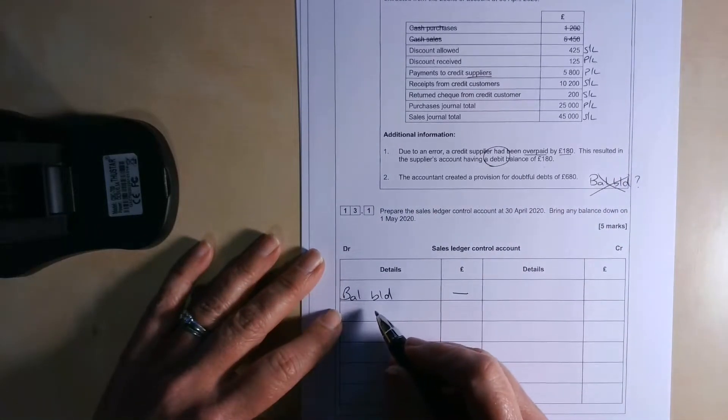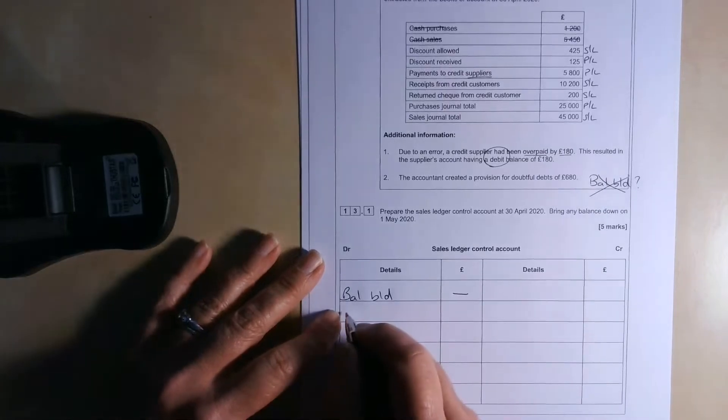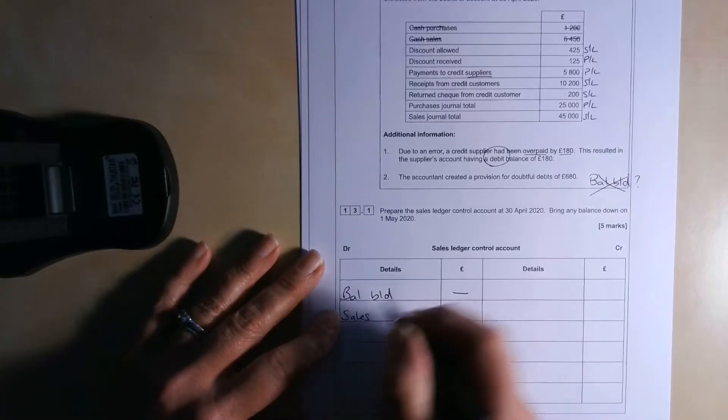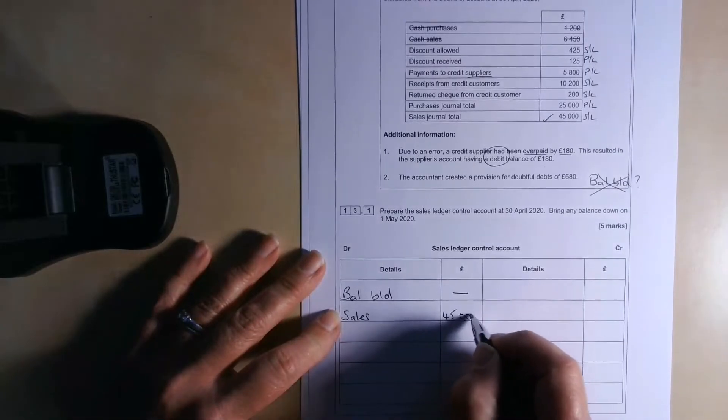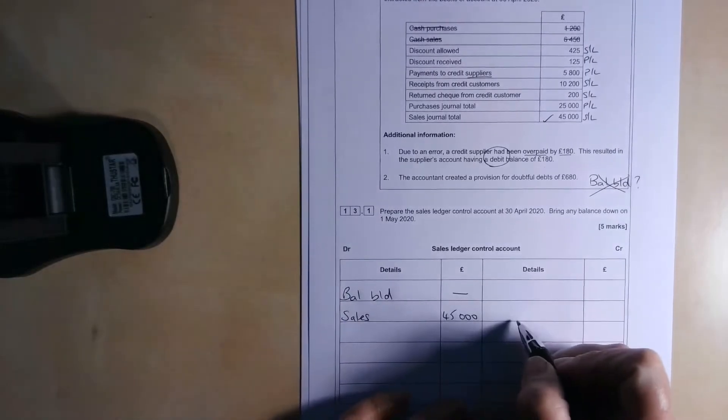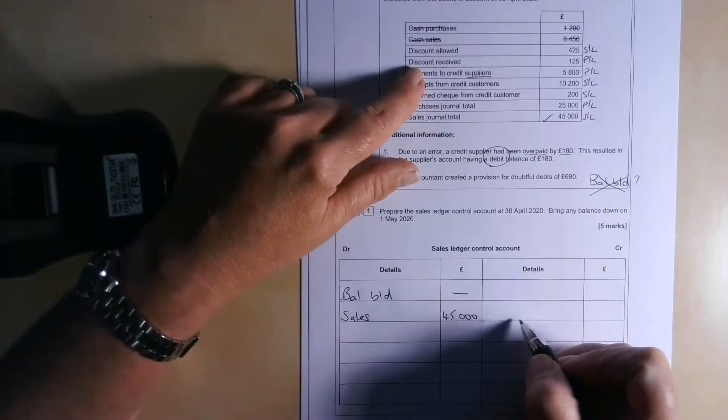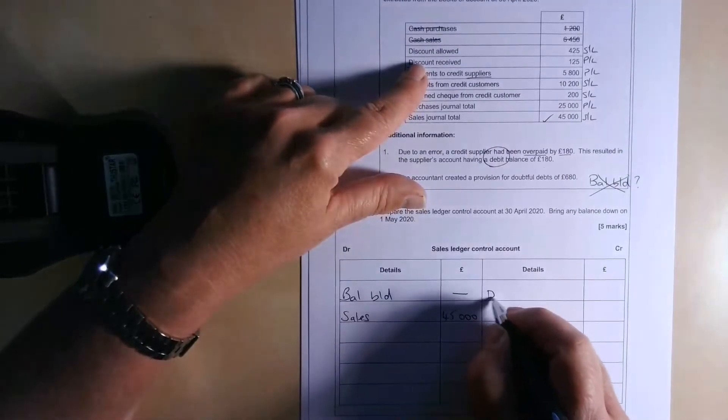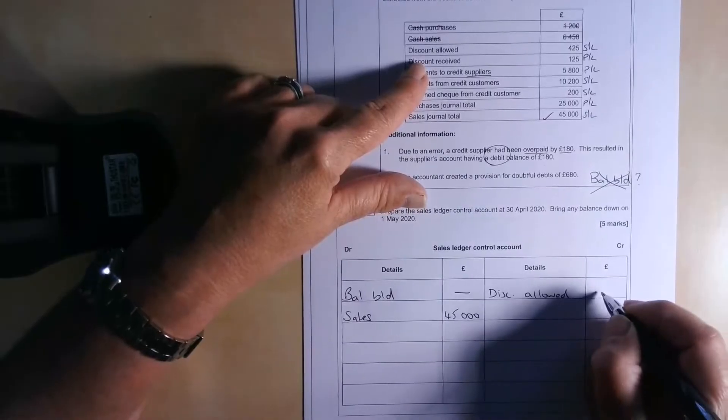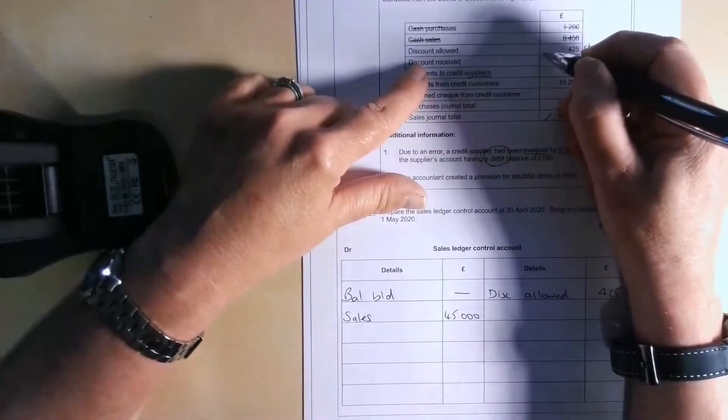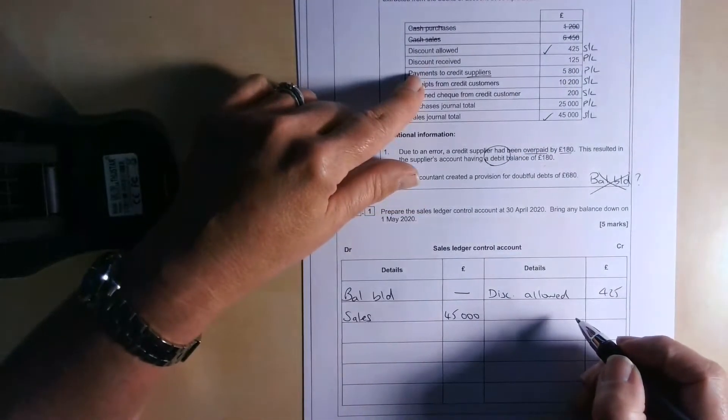Now, anything that makes that balance brought down bigger, so for instance, selling stuff to people, so sales, credit sales, needs to go in there on the debit side. Anything that reduces the amount these customers owe us is going to go in on the credit side. So that will include discount allowed. That's going to go in on the credit side, £425. I'm going to suggest we just tick these off as we do them.